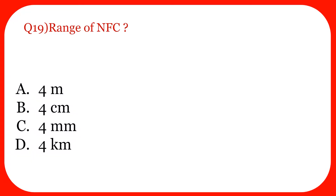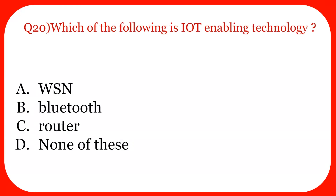Question nineteen: What is the range of NFC? As previously discussed, NFC is a secure short range communication device. The answer is four centimeters. Question twenty: Which of the following is an IoT enabling technology — WSN, Bluetooth, router, or none? The answer is option A — WSN, wireless sensor networks.